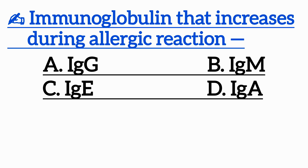Question 17: The immunoglobulin that increases during allergic reaction — Option A: Immunoglobulin G, Option B: Immunoglobulin M, Option C: Immunoglobulin E, Option D: Immunoglobulin A.